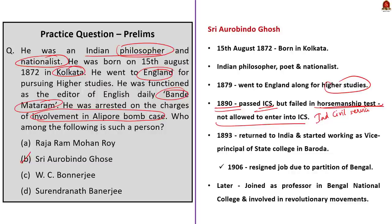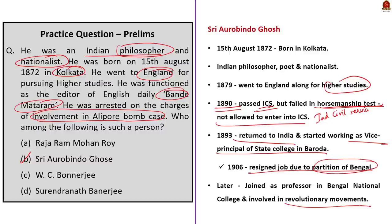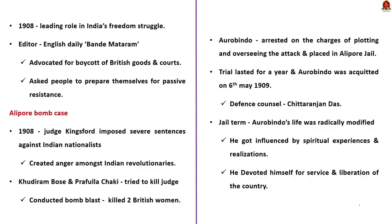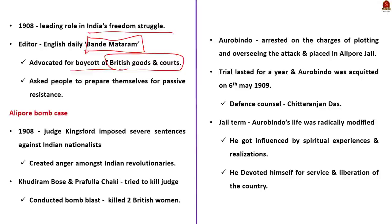Aurobindo returned to India in 1893 and became vice principal of a state college in Baroda. In 1906, he resigned in the wake of the partition of Bengal and joined Bengal National College as professor, becoming involved in the revolutionary movement. From 1908, he played a leading role in India's freedom struggle and was a pioneer of political awakening. He edited the English daily 'Bande Mataram', openly advocating boycott of British goods and passive resistance.